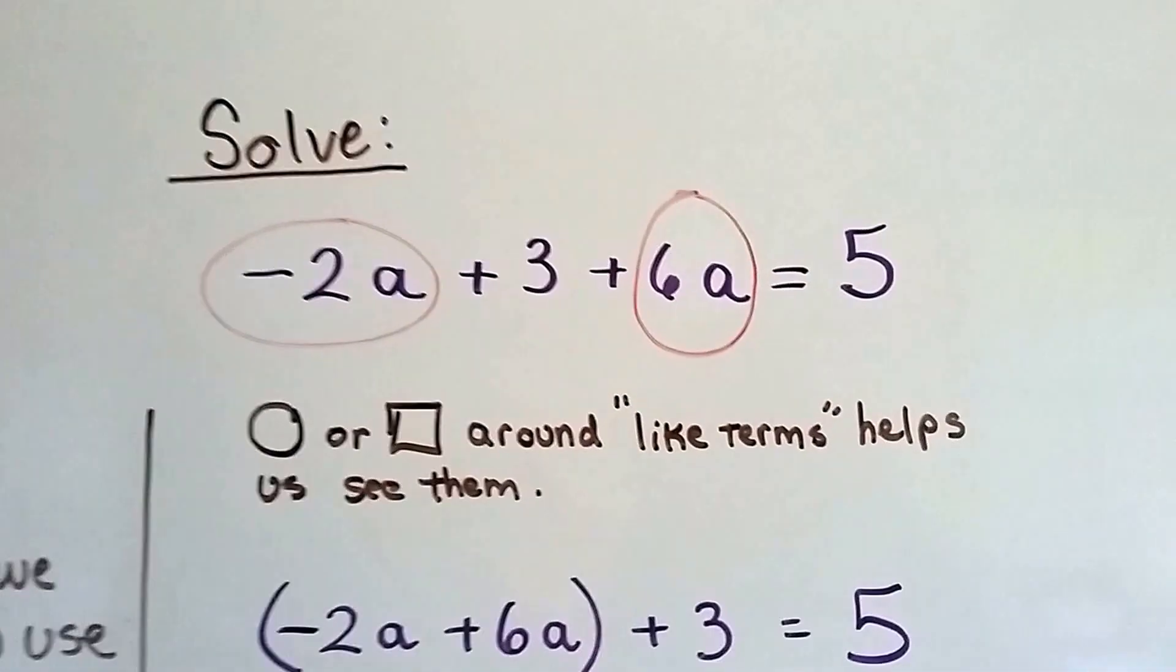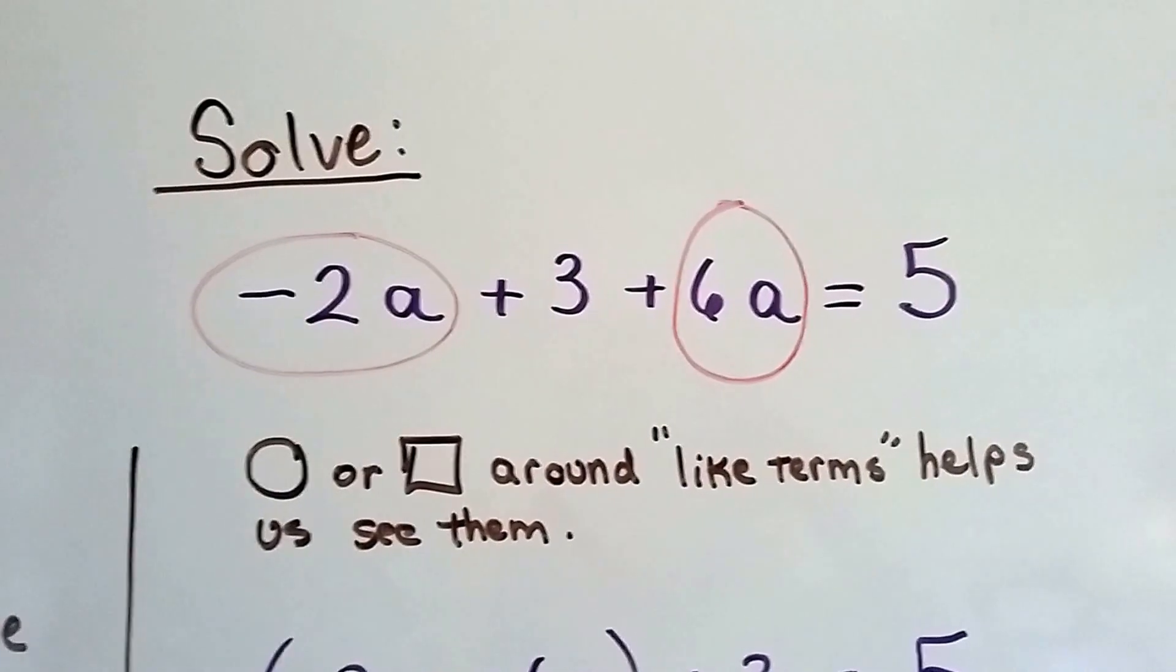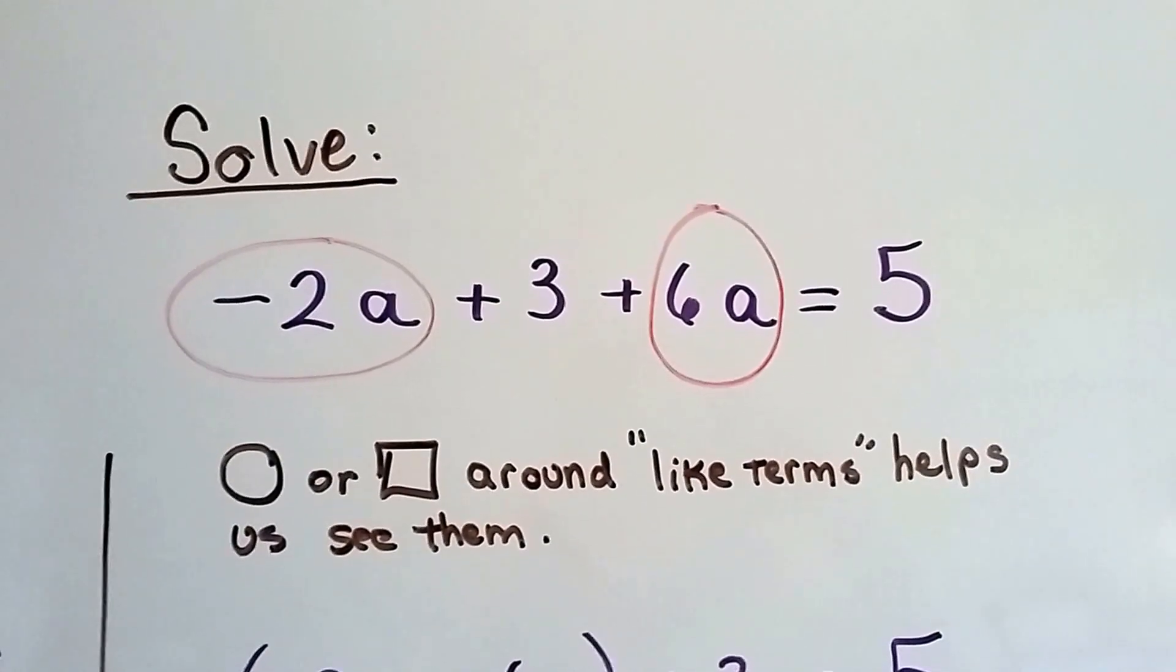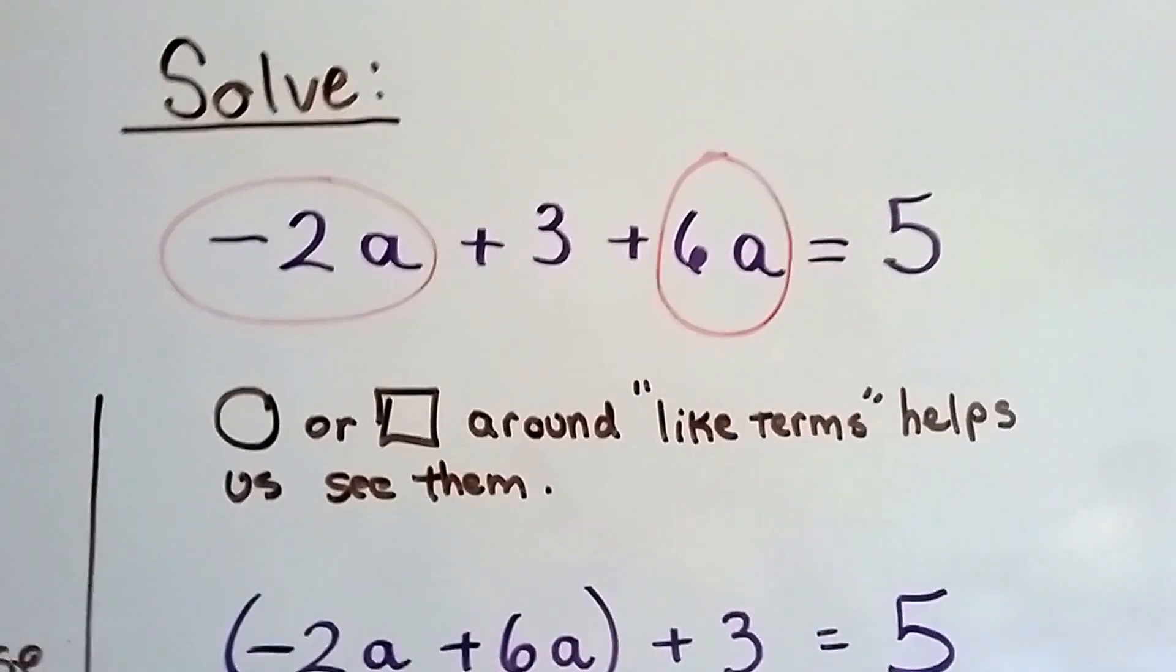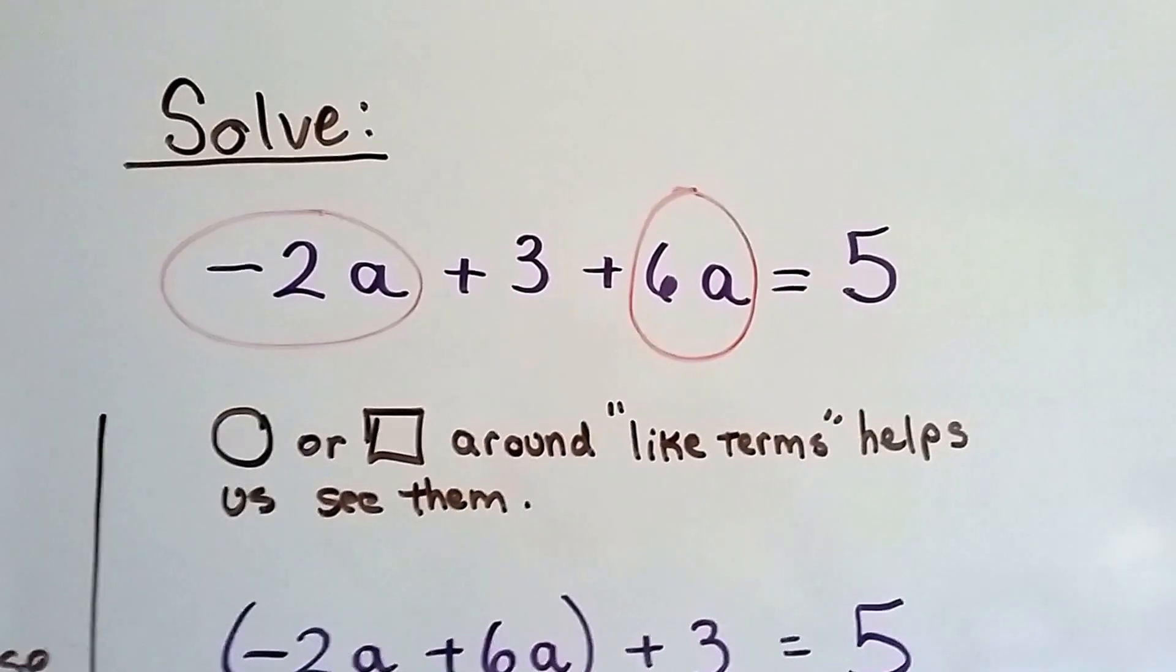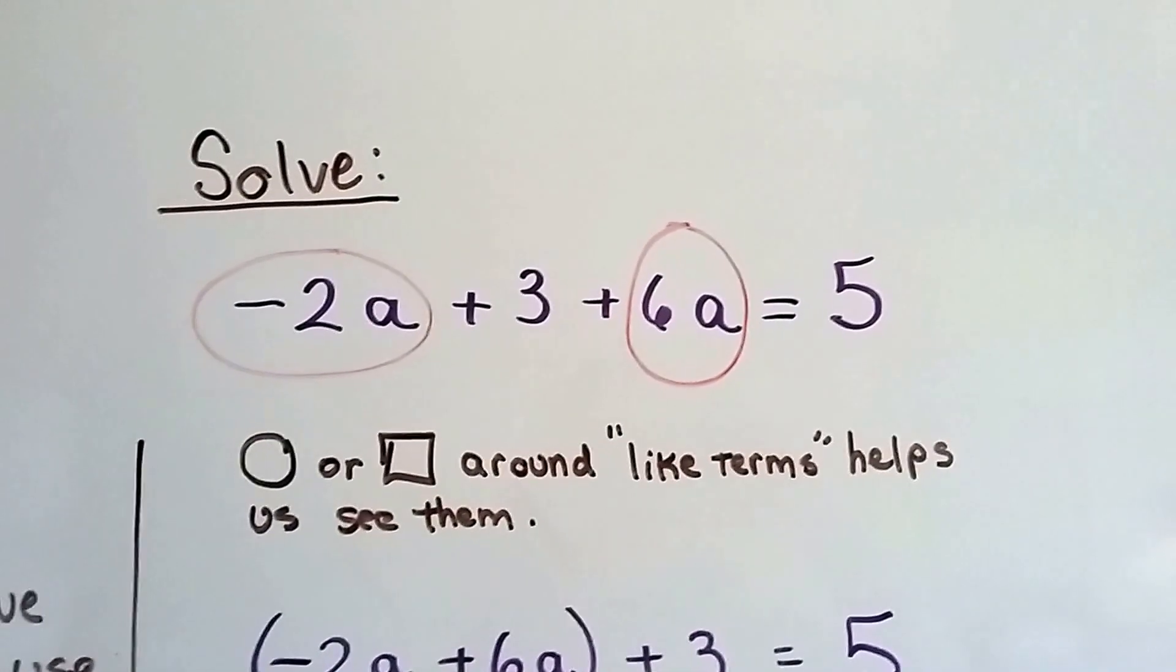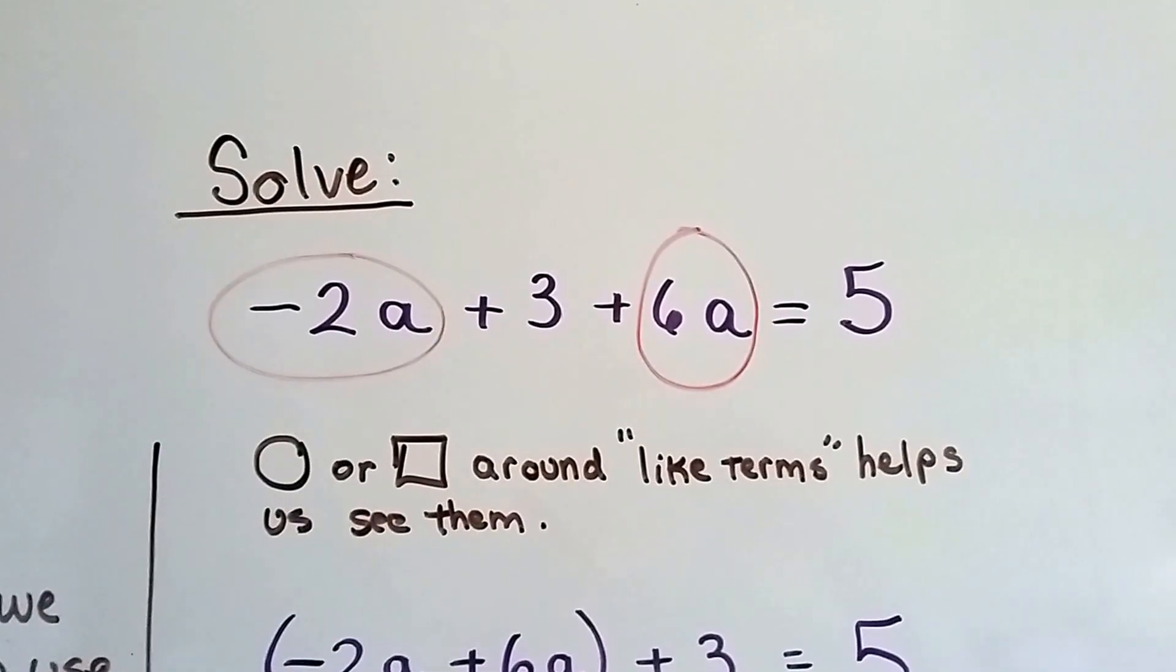So if we need to solve negative 2a plus 3 plus 6a equals 5, we can put a circle or a square around the like terms to help us see them. I talked about that once before, and if there's a lot of terms that are different like a, b, and c, you can make the a a circle, the b a square, and the c a triangle, and it'll help you see them to combine them.